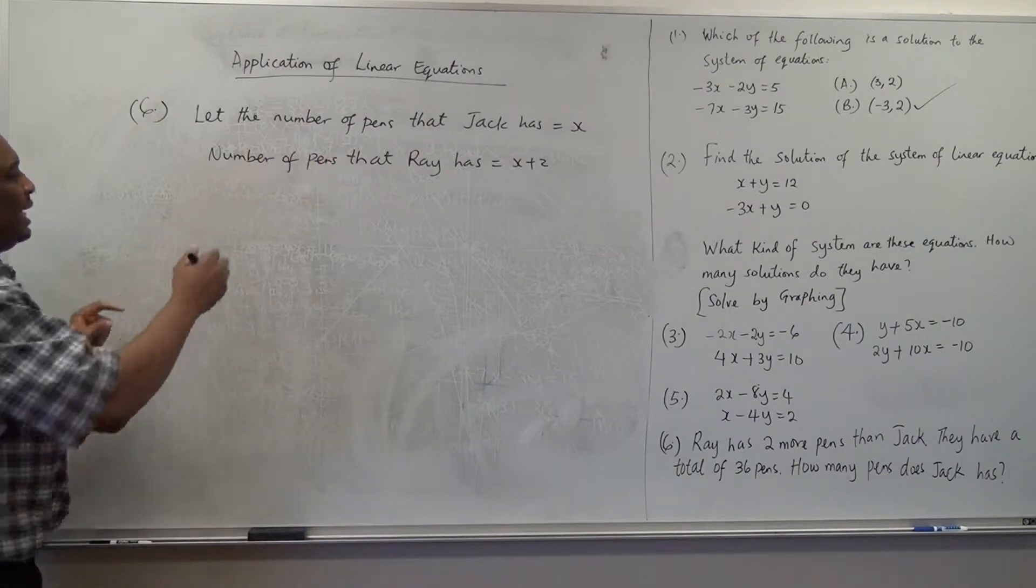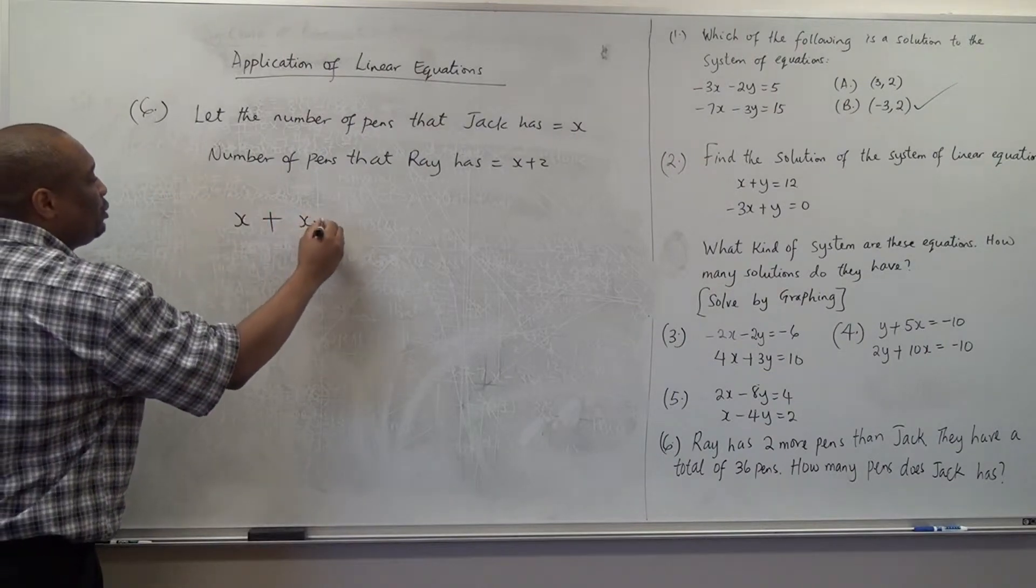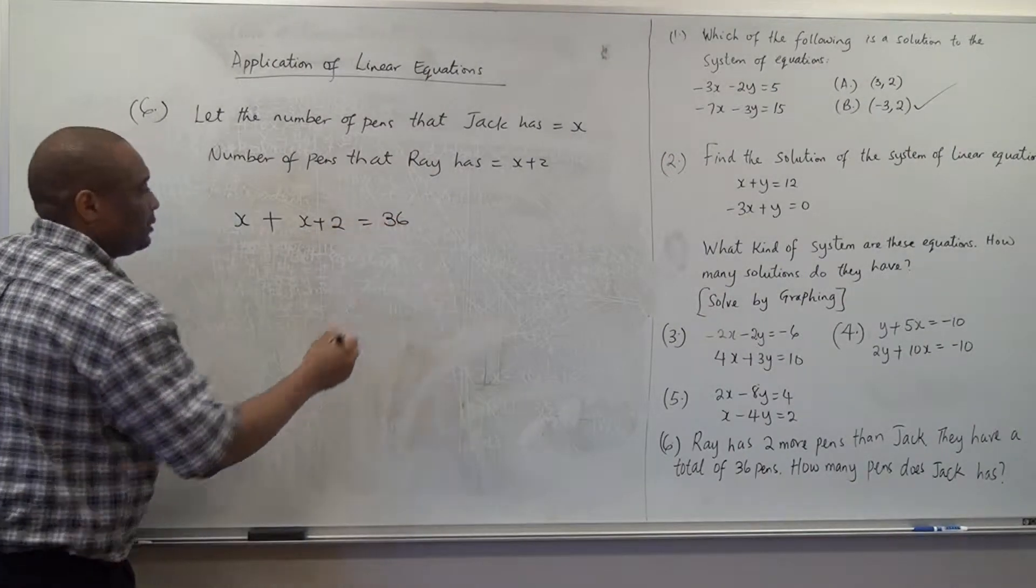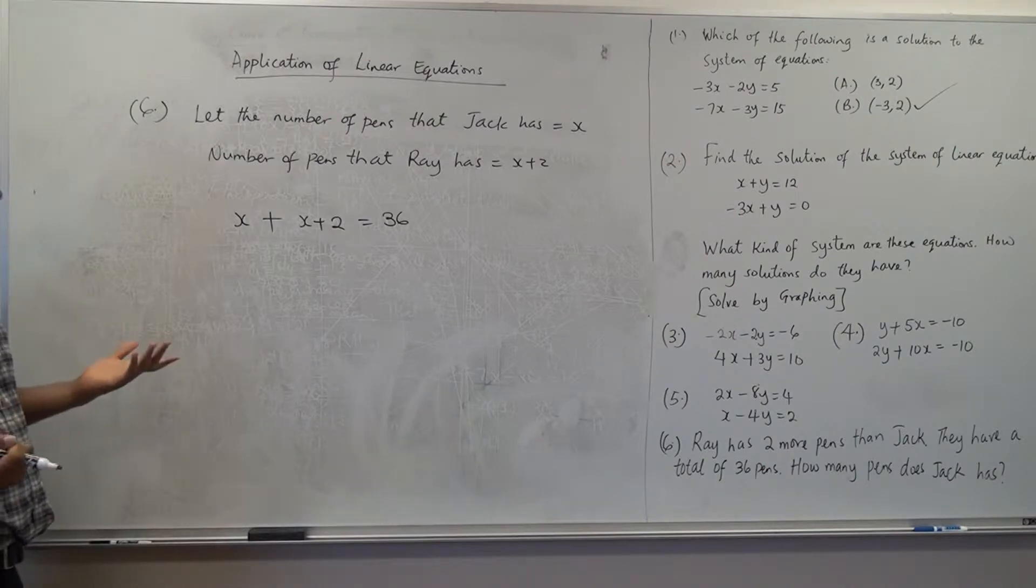So, that means that x, whatever the number of pence that Jack has, plus x plus two, whatever the number of pence that Ray has, will give us thirty-six. So, this is a linear equation. You just solve it like a linear equation.